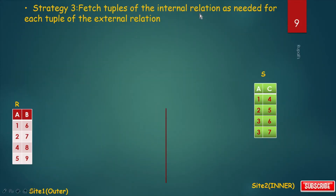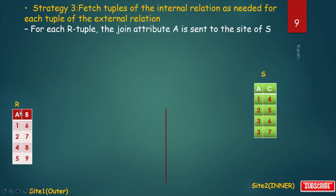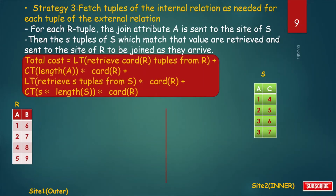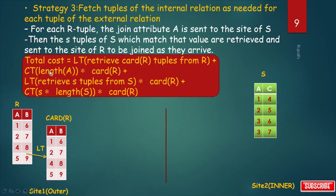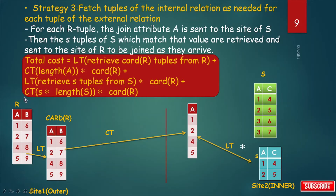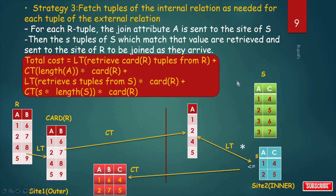Strategy three: fetch tuples of the inner relation as needed for each tuple of the outer relation. For each R tuple, only the join attribute A is sent to the site of S. The matching S tuples are retrieved and sent back to the site of R to be joined as they arrive. The total cost includes: LT to retrieve card(R) tuples from R, CT of len(A) times card(R) to send join attributes, and LT to retrieve S tuples from S times card(R).